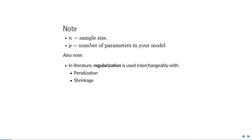Throughout this lecture, whenever I say n I mean the number of independent observations or the sample size, and whenever I say p I mean the number of parameters in your model. Note that in the literature, regularization is used interchangeably with penalization and shrinkage, but all three words have exactly the same meaning in statistics.